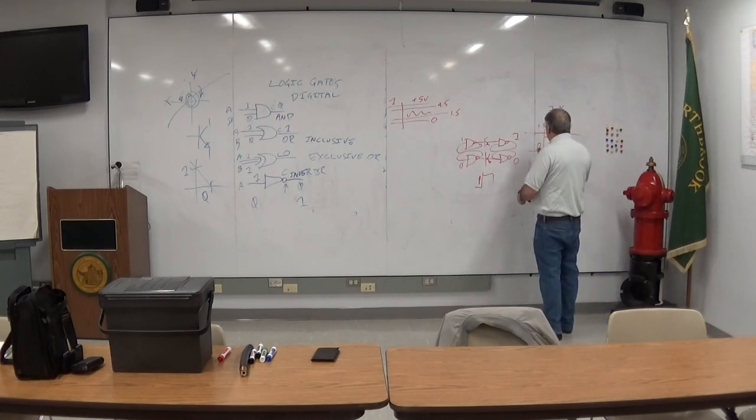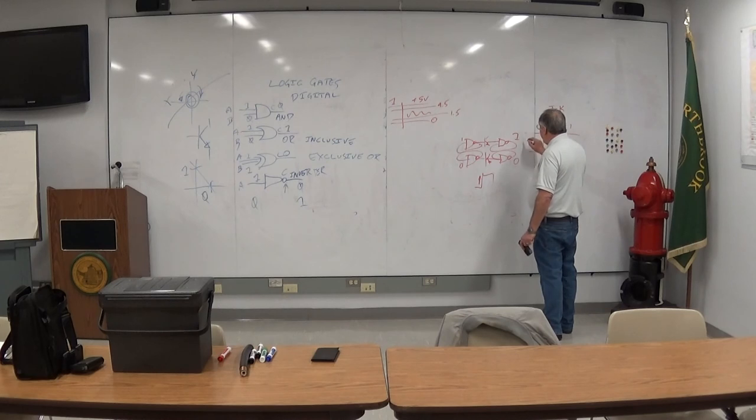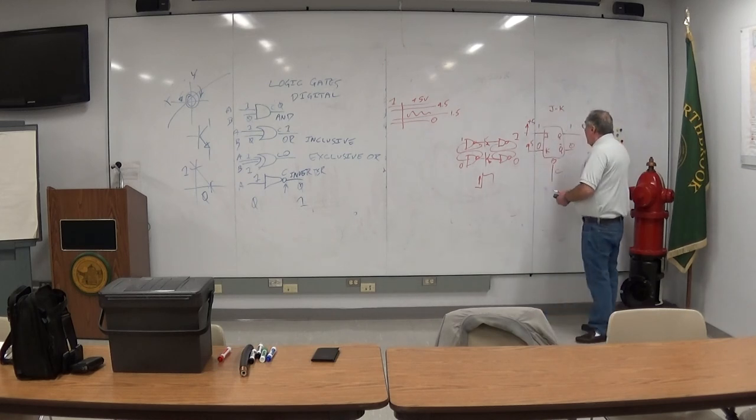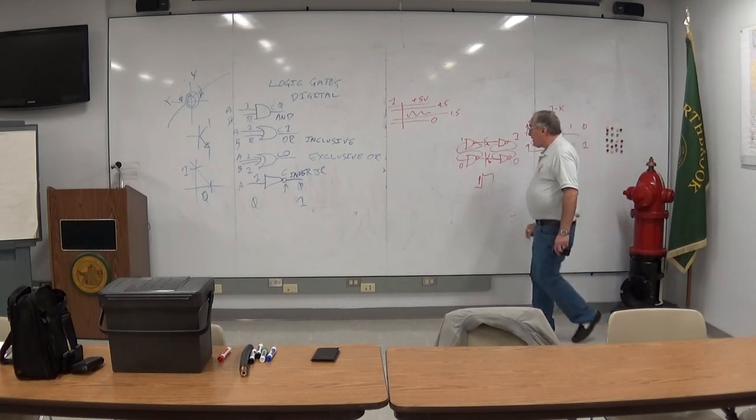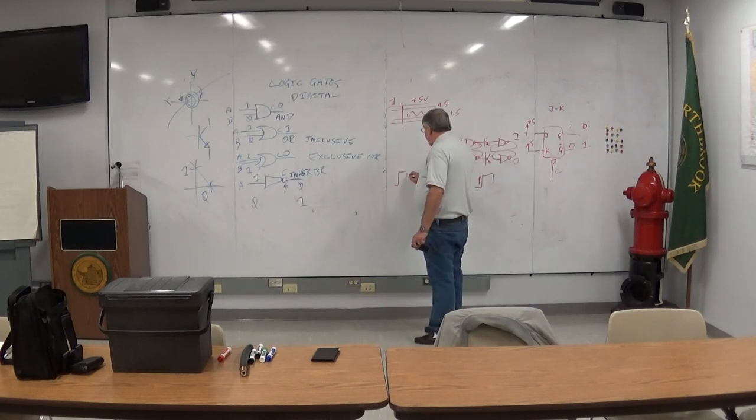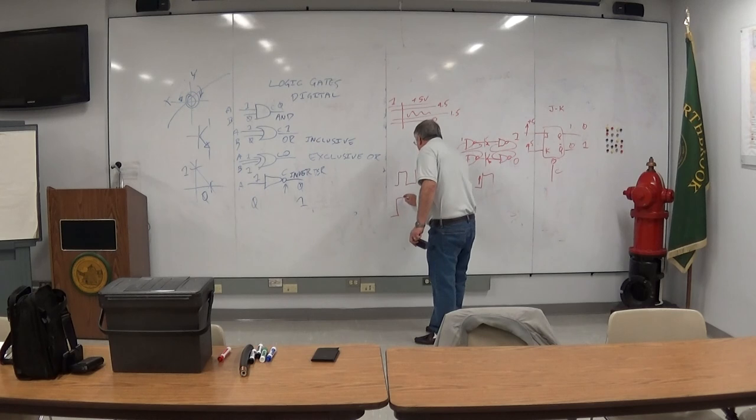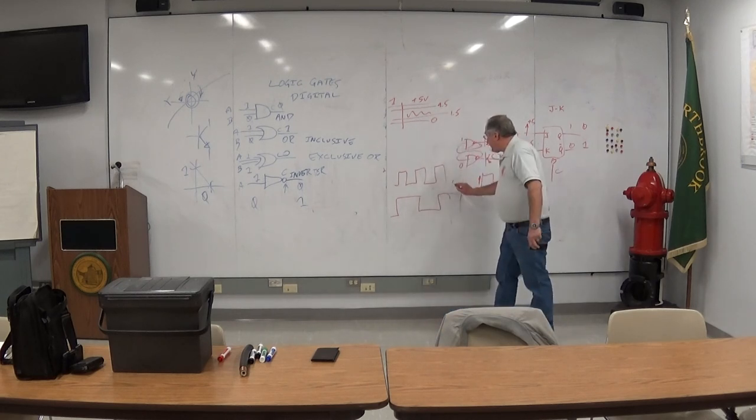There's another feature here. If you took the two inputs and you tied them high or disconnected them so they float up to five volts, it really doesn't matter what the input is but every time the clock goes through, this thing would flip. And what good is something like that? Here's your clock signal coming in. Here's your J and K output going out. It's a frequency divider. Basically it divides by two.